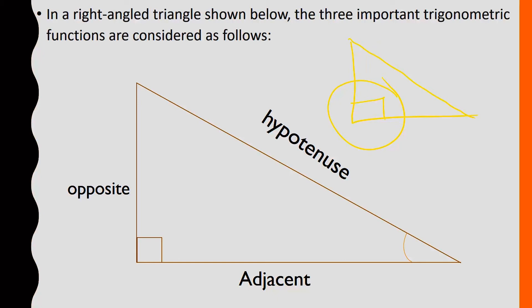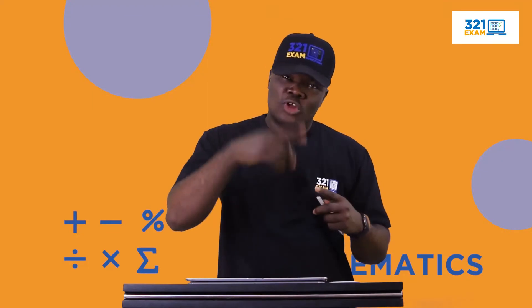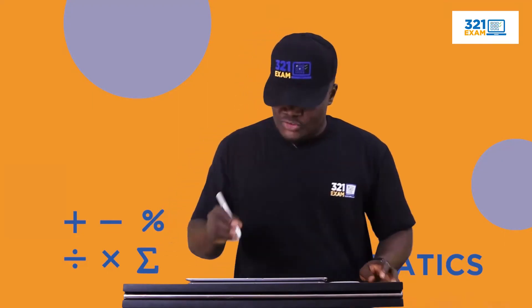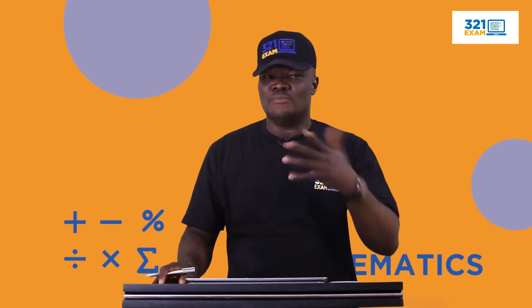Now the very side where this 90 degree is facing is called hypotenuse, the longest side. Then your angle of interest. Because in every right angle triangle, you must have an angle of interest. I decide to put my angle of interest to be here, theta. So the particular side that is directly opposite the angle of interest is taken to be the opposite side. The remaining side is called the adjacent. Please take note of this illustration. It is very, very important.